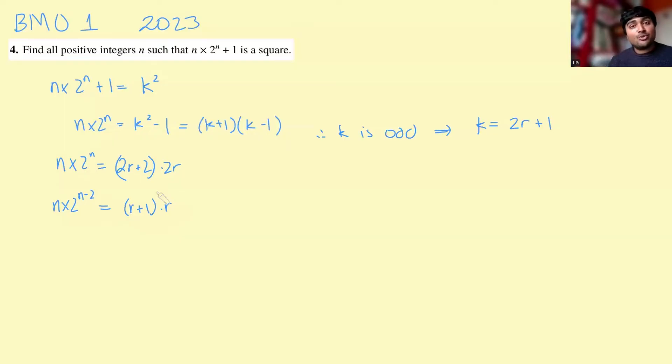n times 2 to the n minus 2 is r times r plus 1. Now here's where we make a crucial observation. This right-hand side here is the product of two consecutive integers, r, and r plus 1. And now what's perhaps the most basic fact that we can state about two consecutive integers? One must be odd, one must be even. So out of these two numbers, one of them must be odd, and one of them must be even. So we don't know which, so we're going to split this into two cases.